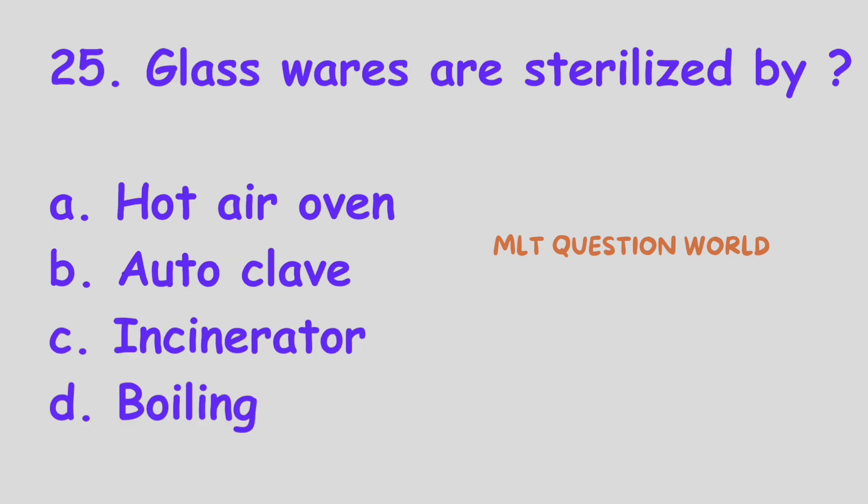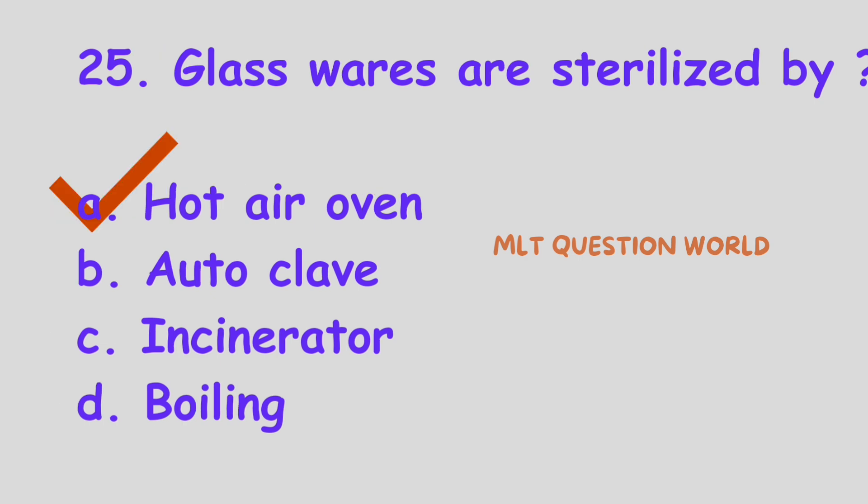Question number 25. Glass wires are sterilized by: Option A, Hot air oven; Option B, Autoclave; Option C, Incinerator; Option D, Boiling. Which of the following sterilization methods is used for glass wires? The right answer is Option A, Hot air oven. Hot air oven is used for sterilization of glass wires.